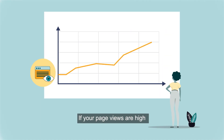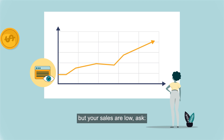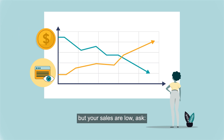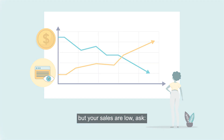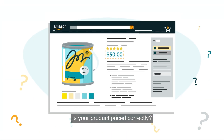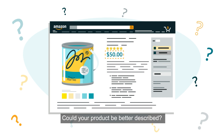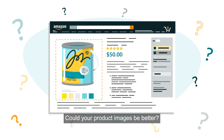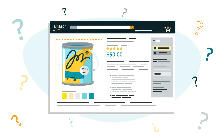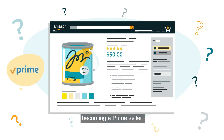If your page views are high but your sales are low, ask yourself: Is your product priced correctly? Could your product be better described? Could your product images be better? Should you consider becoming a Prime seller or using Fulfillment by Amazon?